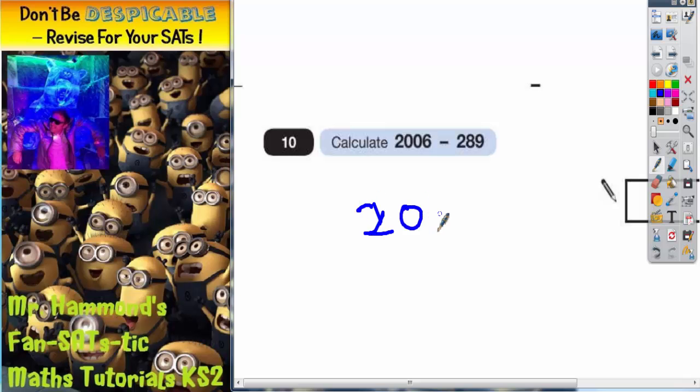2006, write it nice and clear, take away 289. Now you've got to be really careful here because if you do that, that is not lined up in the correct columns. Because obviously from 2006, this would be units, this would be tens, hundreds, and this would be thousands.